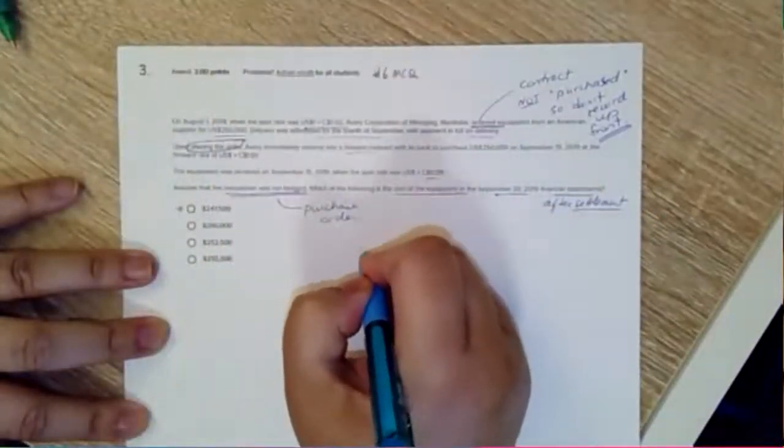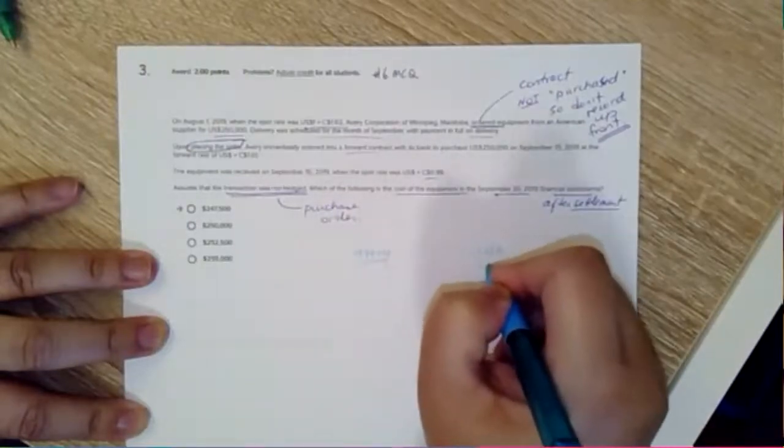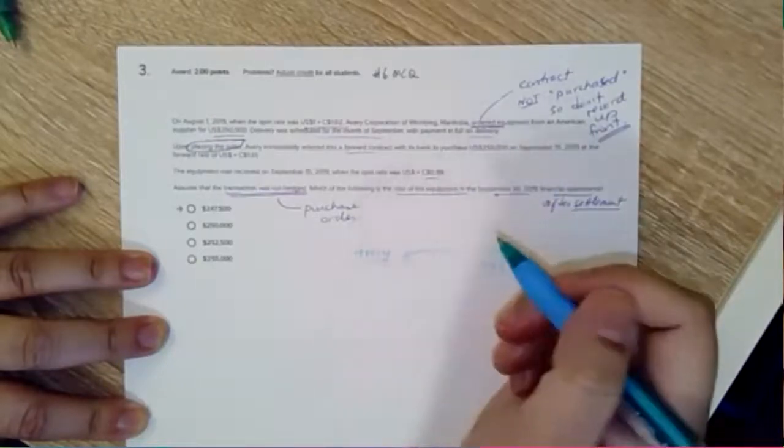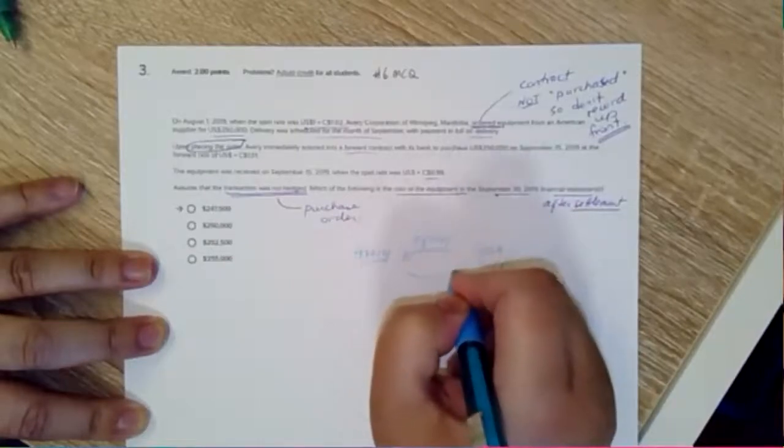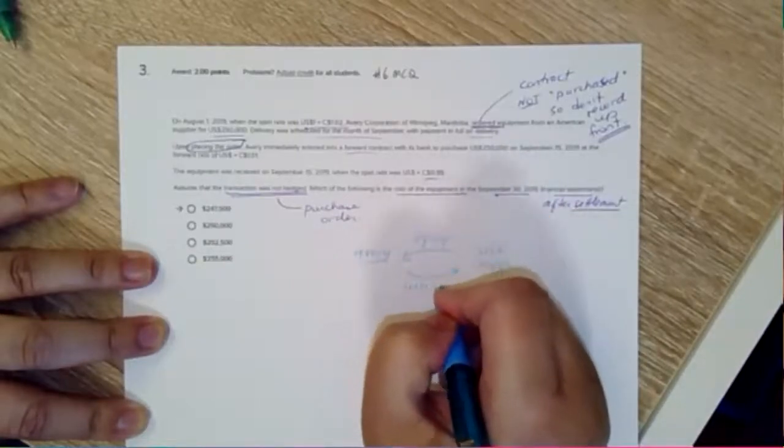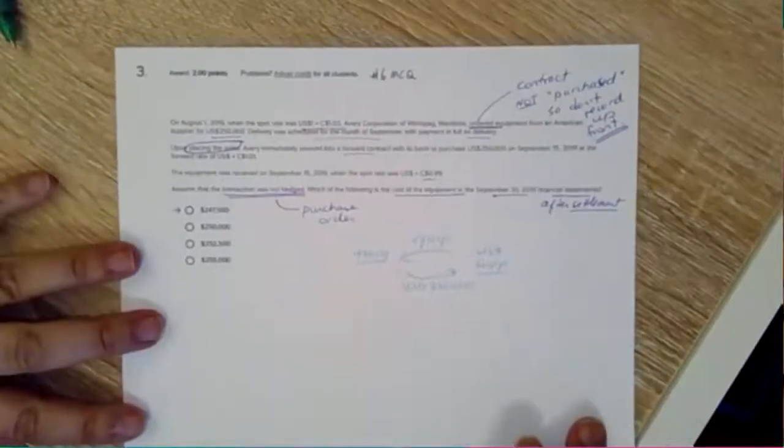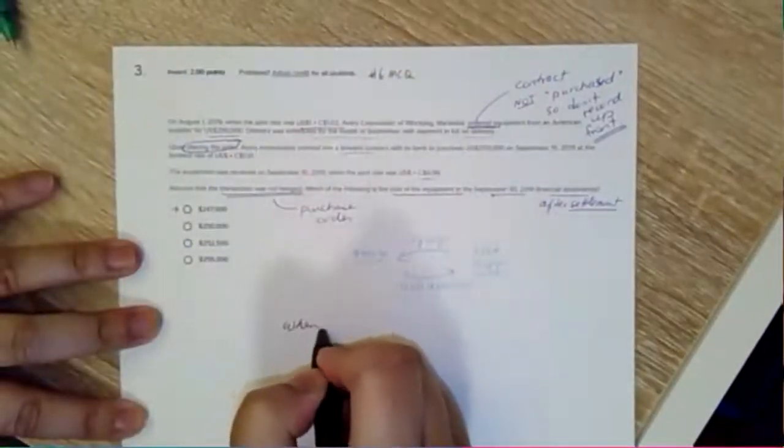The forward contract in this question doesn't even really make a difference. Let's draw out our little chart. Here's Avery, here's the USA supplier. Avery is in Canada. We are going to get equipment and we are going to give them USD $250,000.